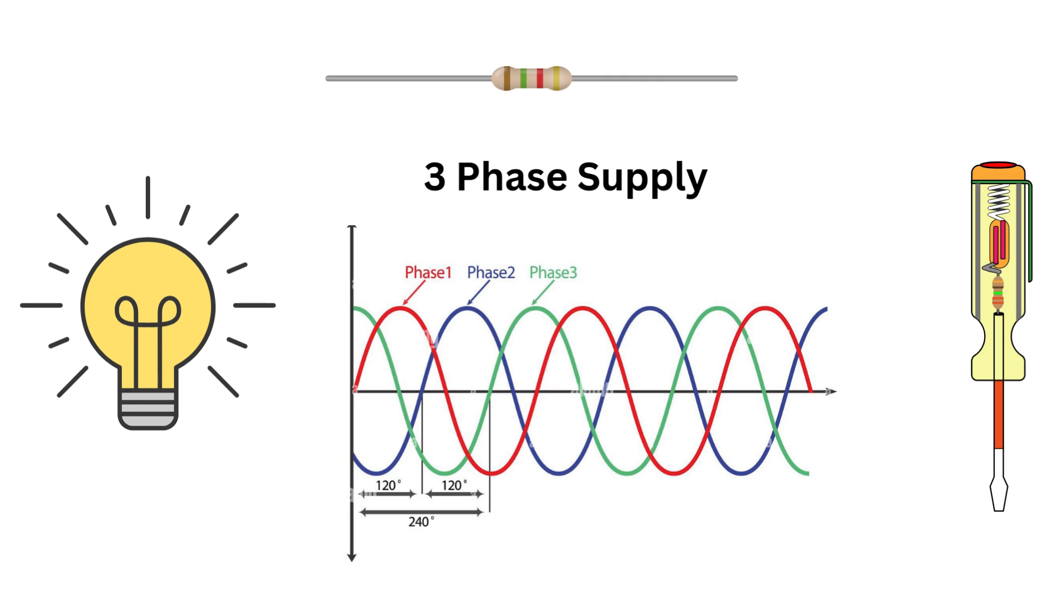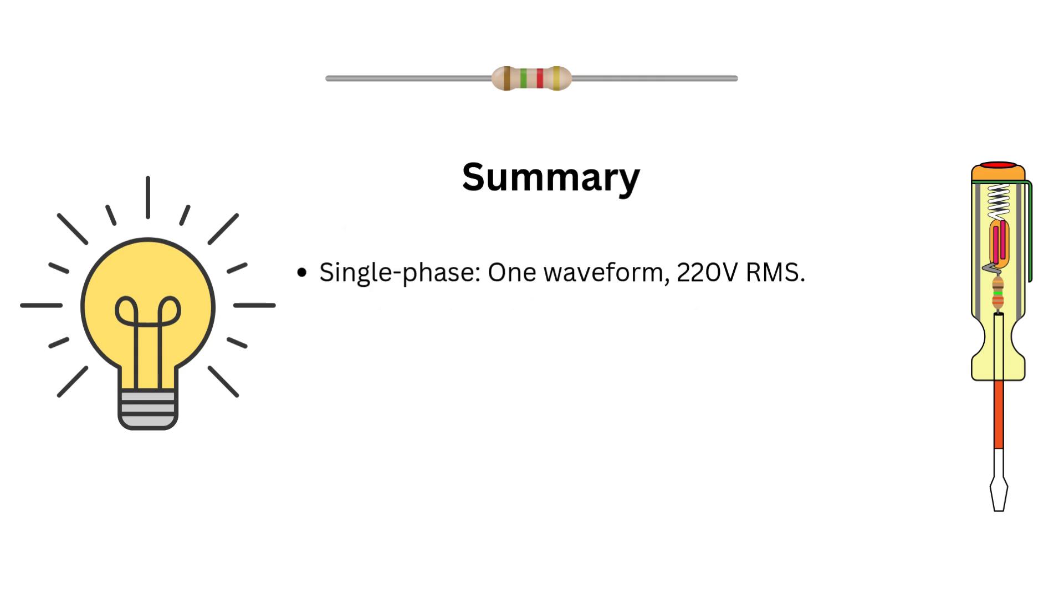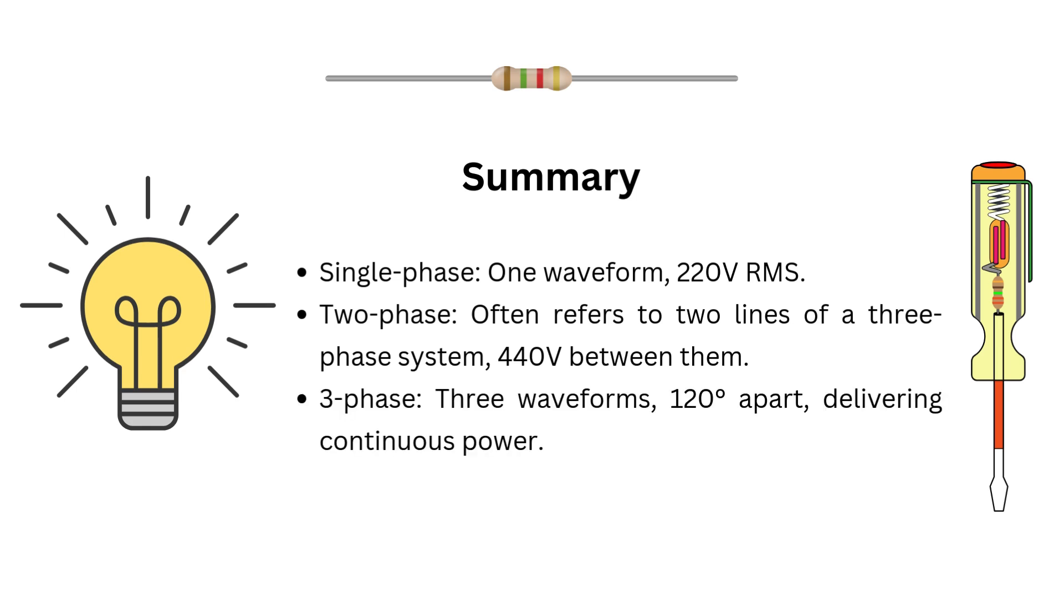Let's quickly recap. Single phase is one waveform 220 volts RMS. Two phase often refers to two lines of a three phase system 440 volts between them. Three phase is three waveforms 120 degrees apart delivering continuous power. Line voltage isn't 220 plus 220 plus 220. It's calculated using vector math which is root 3 into phase voltage.